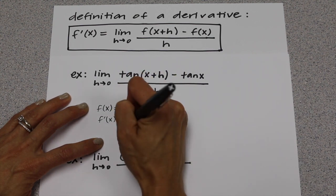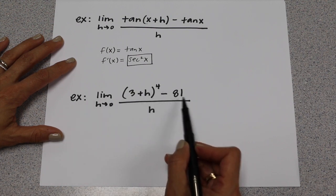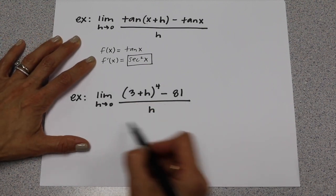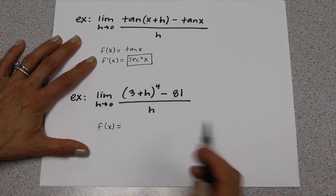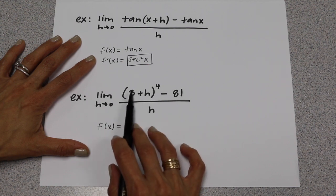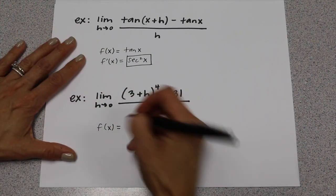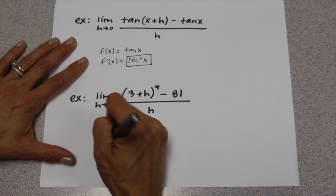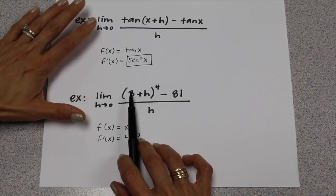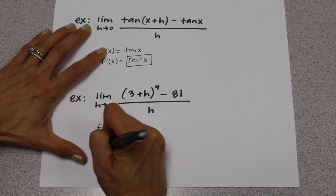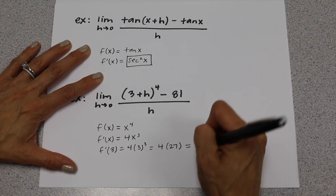For the last problem, we have the limit as h goes to 0 of (3 plus h) to the 4th, minus 81, all over h. This is in the correct form, so it equals f prime of x. We identify f of x by looking at the top left: x plus h is being substituted, so covering that up, f of x is x to the 4th. Taking the derivative gives 4x cubed. We then plug in x equals 3, giving 4 times 3 cubed, which equals 108.